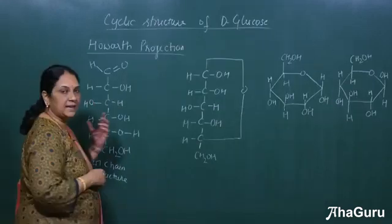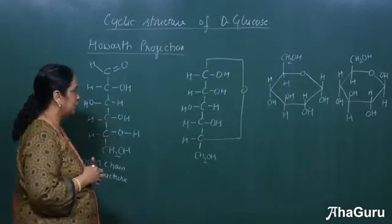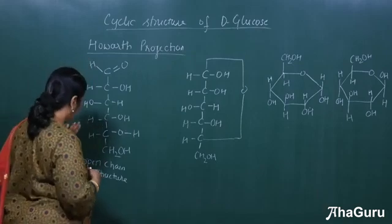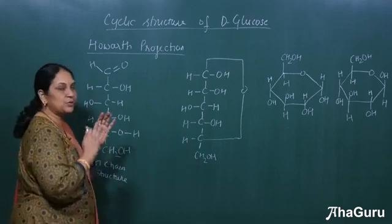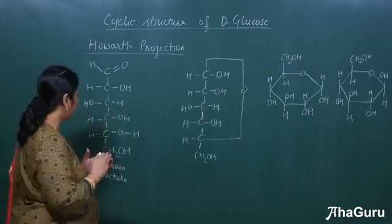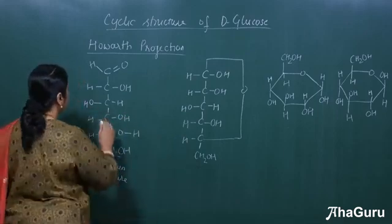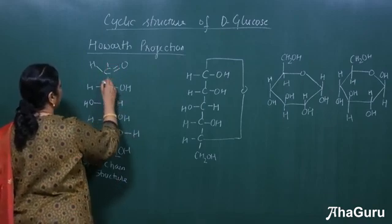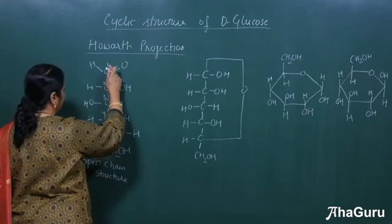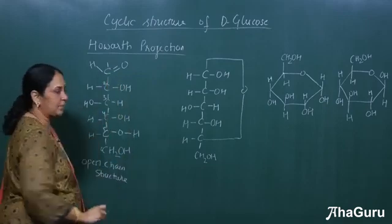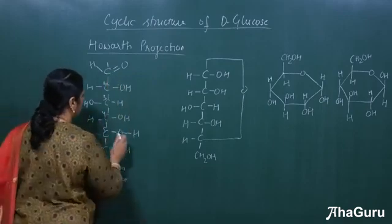Now let us see the cyclic structure of glucose. First I'll show you that this is your open chain structure. So how do you write the cyclic structure? When you see it in the book, it is a little difficult but it's actually easy. See here, let me number first: 1, 2, 3, 4, 5 and 6. I have numbered the carbons.